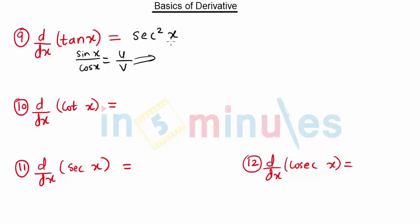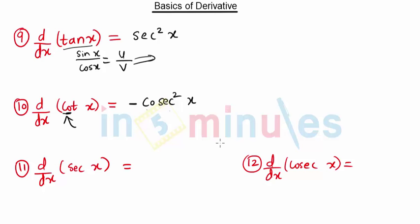What is the derivative of cot x? There is some relation between tan and cot. Since 'cot' starts with 'co', its derivative will also involve cosecant² x. Since tan x gives sec² x, cot x will give cosecant² x. But since it starts with 'co', this will be minus cosecant² x.